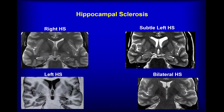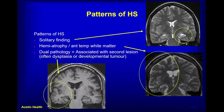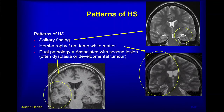Hippocampal sclerosis can be a solitary finding, associated with hemiatrophy, or associated with a discrete second potentially epileptogenic lesion — what in the epilepsy world is called dual pathology. Here we have a patient with two lesions: hippocampal sclerosis and polymicrogyria — two lesions which may each cause epilepsy. This underscores an important role for clinical correlation and functional imaging to inform us about the relative importance of resecting one or both pathologies.